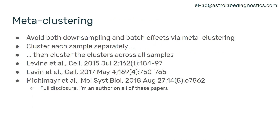One solution for addressing this is metaclustering. Metaclustering is a computational technique that avoids both downsampling and batch effects. The way it works is you cluster each sample separately, effectively eliminating inter-sample batch effects. You end up with 20 or 30 clusters per sample — way too many to annotate — so you can then cluster the clusters across samples and end up with 20 or 30 metaclusters, which you can annotate and then apply back to the original samples.